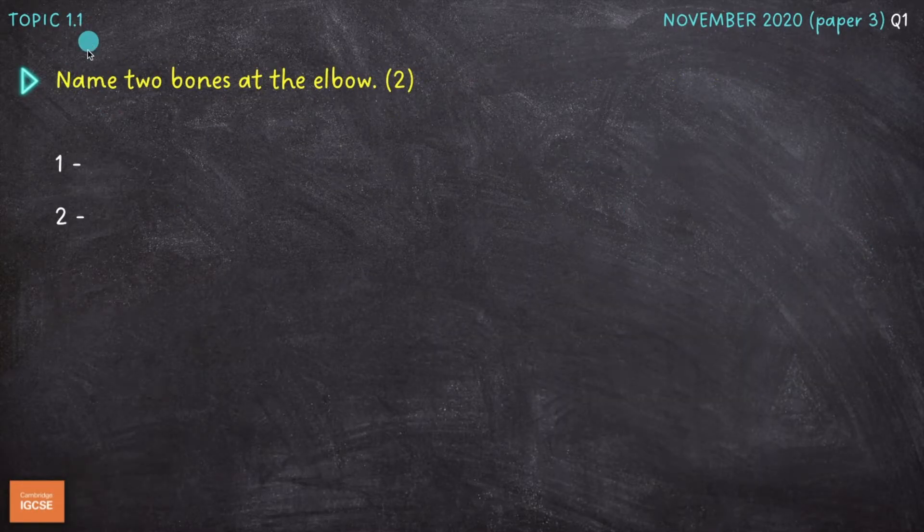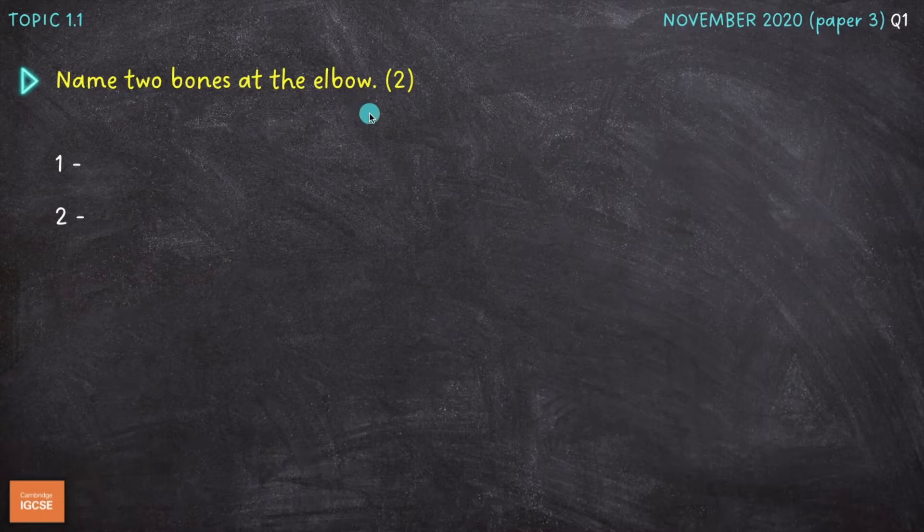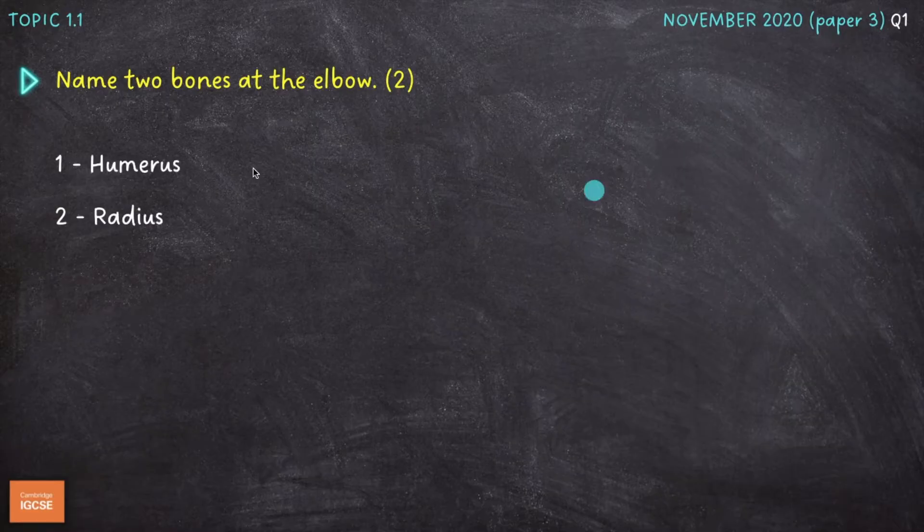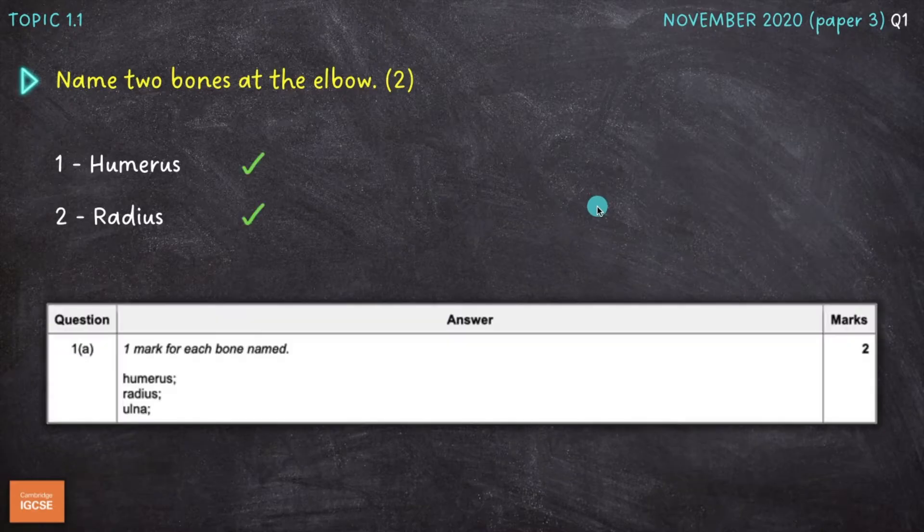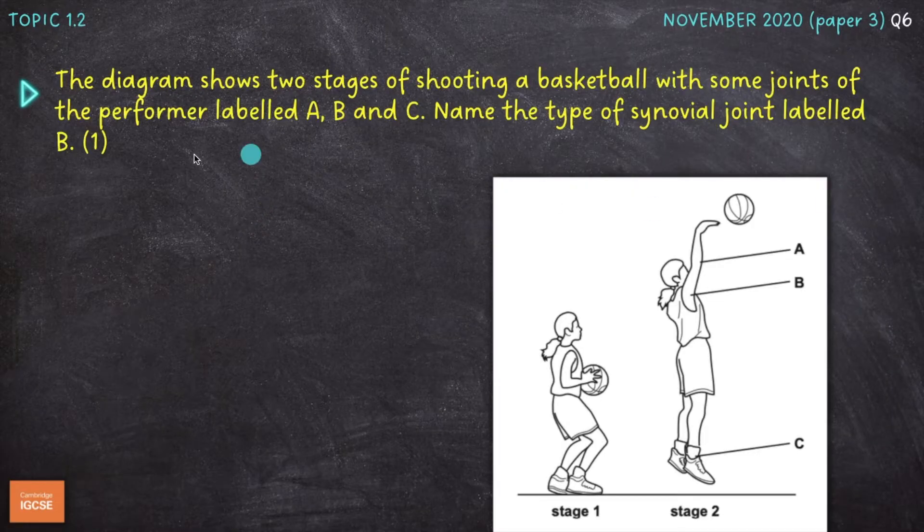Next question on topic 1.1, name two bones at the elbow. So probably the easiest type of question you're going to get this one, just to name bones that make up a certain joint or articulate at a certain joint. This time the elbow, and I've gone for the humerus, which is the only bone in the upper arm, and then the radius, which is one of two bones in the forearm, the other one being the ulna, which would have also got you a mark.